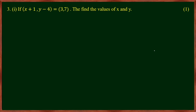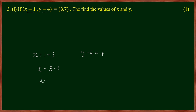Let's go to the third one. Here is the third element: x plus 1 is equal to 3. Here is the second element: y minus 4 is equal to 7. So x is equal to 3 minus 1, which gives x is equal to 2.